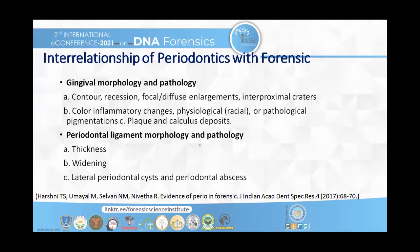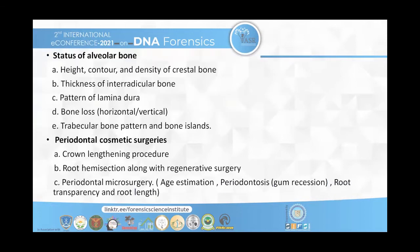Similarly, periodontal ligament morphology and pathology — the thickness, widening, and periodontal abscess — are also mostly evident in middle-aged or older-aged patients. The status of alveolar bone: bone loss is another symptom of periodontal diseases and is also seen more in older patients rather than younger patients. We can also identify a patient depending on cosmetic surgeries they have undergone before death, for example crown lengthening procedure or hemisection.